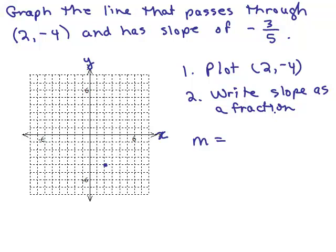Next, write the slope as a fraction without a minus sign out front. The slope is negative, so either the numerator or denominator must be negative. We can write it as negative 3 over positive 5 — that's the rise over the run. From the point 2, negative 4, we run positive 5 (go to the right 1, 2, 3, 4, 5) and then go down 3. That gives another point. If we do it again, we'll be off the graph paper, so we can go ahead and draw the line with these points.